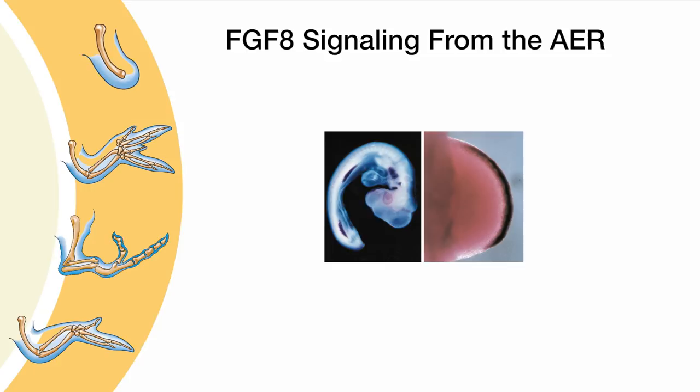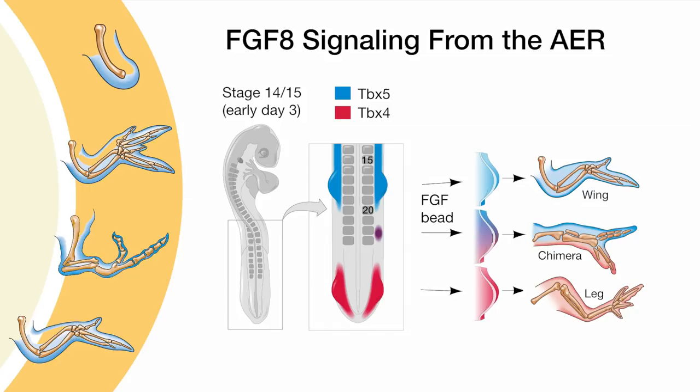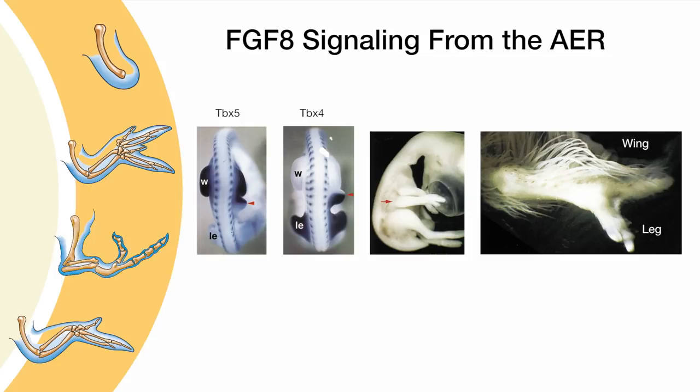FGF8 is only expressed in the AER of the limb bud, and it alone can compensate for removal of the AER and promote normal limb development. Further dramatic evidence of the inductive powers of FGF8 in limb outgrowth is demonstrated by the administration of ectopic FGF8 protein to the body wall between the limb fields. This results in the induction of an ectopic limb with chimeric identity such that the more anterior half expresses TBX5 and develops into a wing, while the posterior half expresses TBX4 and adopts leg identity.